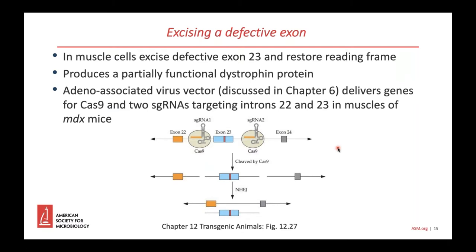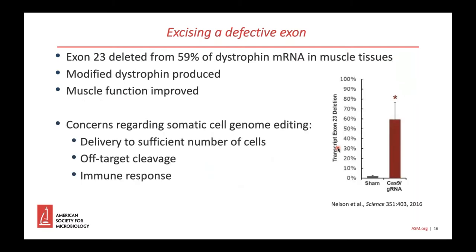Excision of the exon carrying the premature stop codon would restore the reading frame, leading to production of a partially functional dystrophin protein. An adeno-associated virus vector was used to deliver the single guide RNA and Cas9 genes for expression in muscle cells of MDX mice, and the defective exon was deleted from about 60% of cells in the muscle tissue, restoring some muscle function. You might generate discussion with students about the limitations of somatic cell genome editing, such as correcting a sufficient number of cells, potential off-target effects, and the possibility that the recipient's immune system may respond to the viral vector.